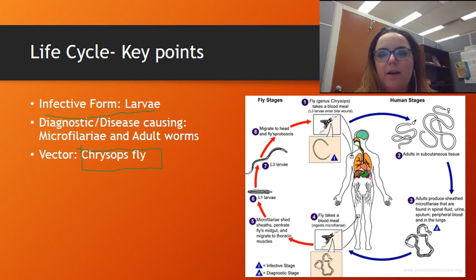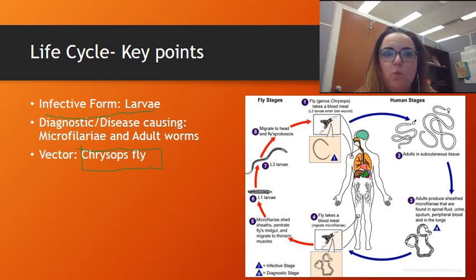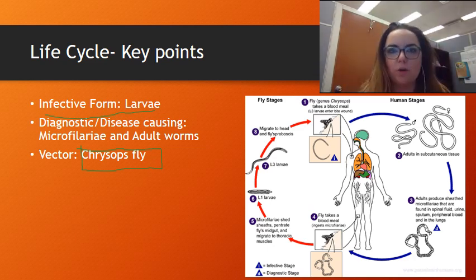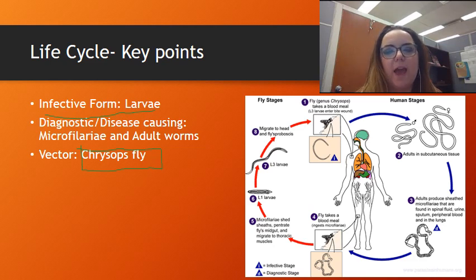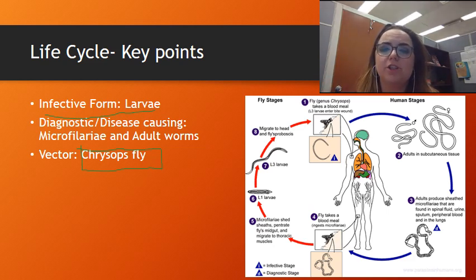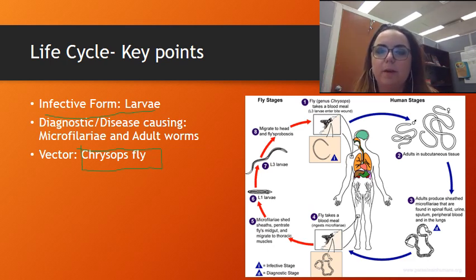Basically you have a chrysops fly that takes a blood meal. This fly is already infected with loa loa, making it essentially an arboparasite — an arthropod that needs an active infection in its salivary glands in order to deposit the larvae onto the patient. When the fly bites it creates a little wound, and the larvae actually enter into the subcutaneous tissue right there.